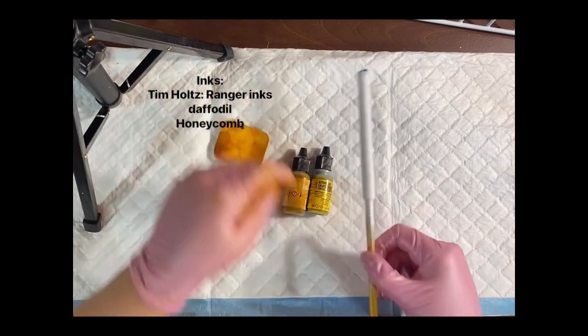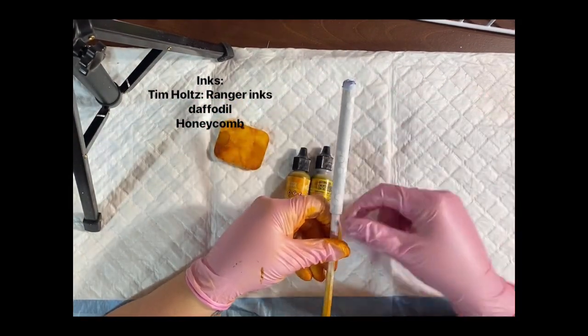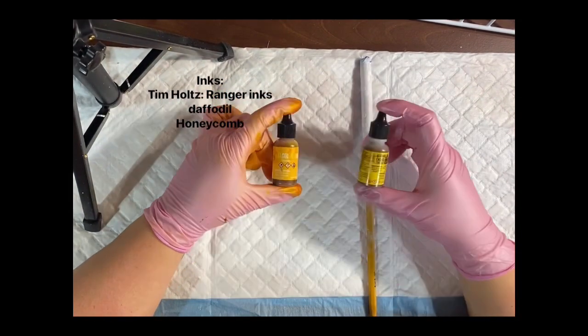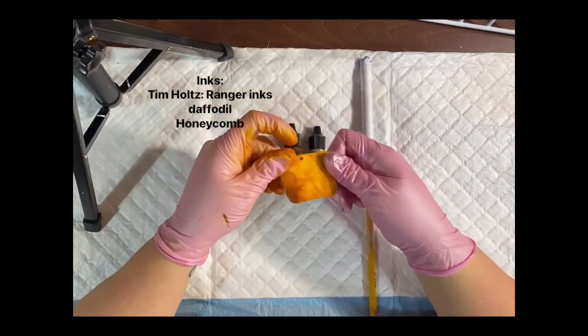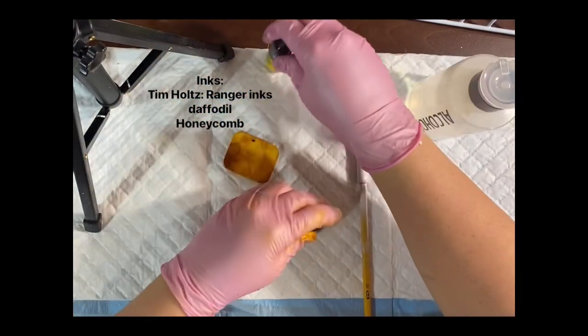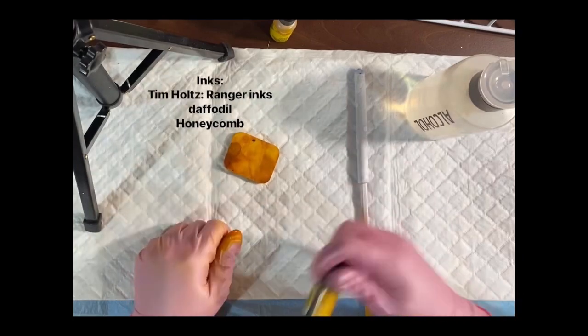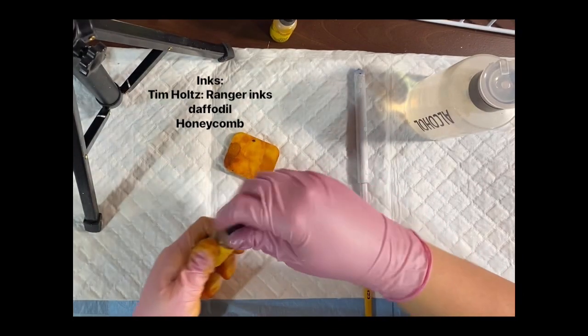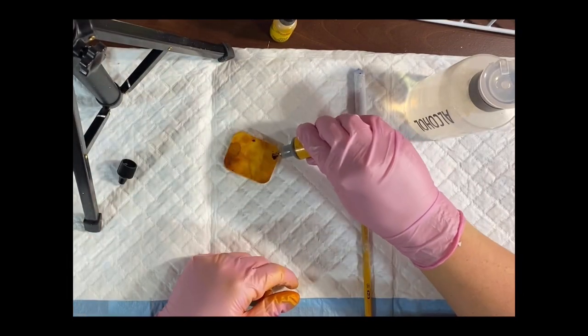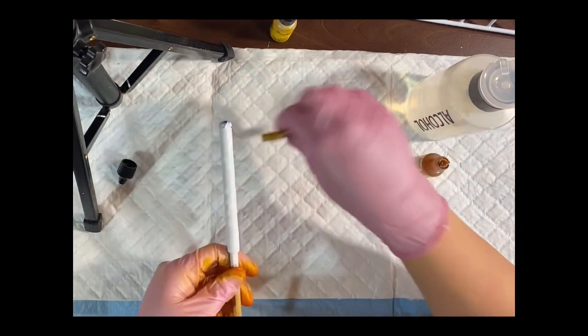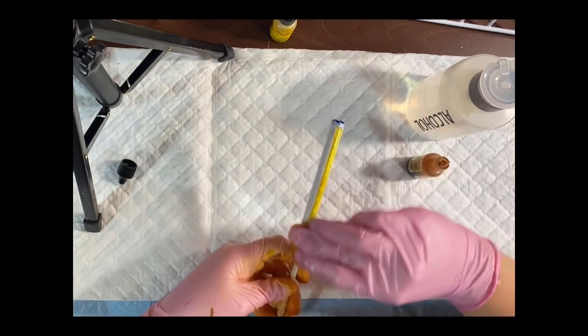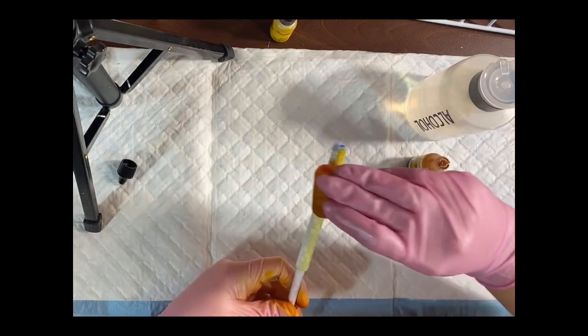Once your paint is dry, then you can move on to the inking part. I use Daffodil and Honeycomb from Tim Holtz and I have an old makeup sponge. You can also use alcohol to add a little bit of texture if you'd like. So what I end up doing is I usually just base coat the entire pen with Daffodil. It doesn't have to be pretty at this moment. This is just to get a color on to your pen.